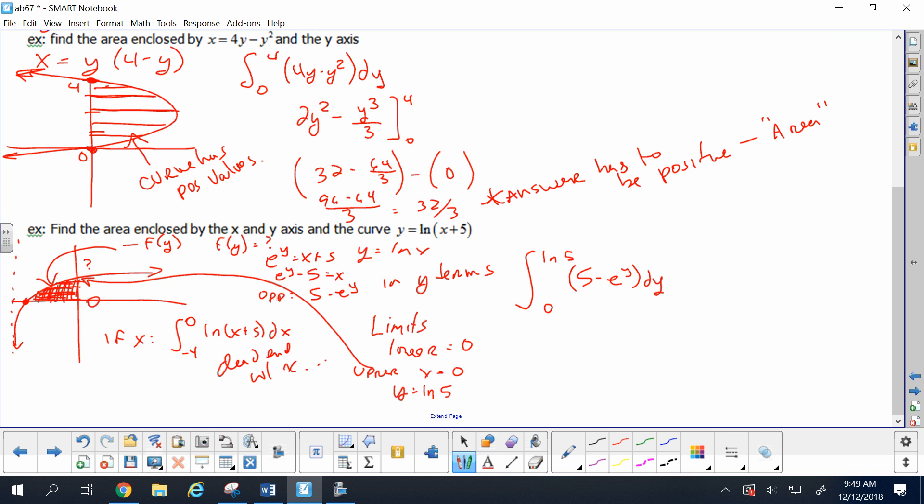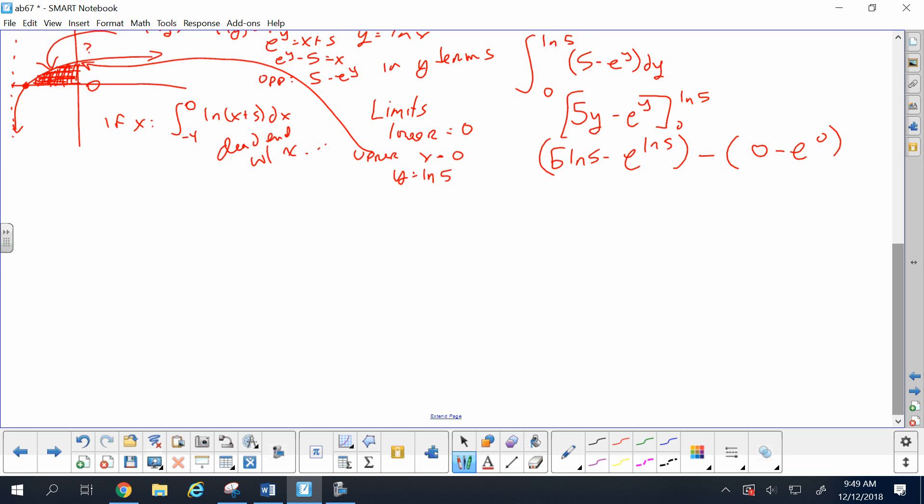We want to integrate five minus e to the y with respect to y. Now that you can integrate. You can't integrate log, but you can integrate e. What's the anti-derivative of five? Five y. And what's the anti-derivative of e to the y? E to the y from zero to log of five. When I evaluate at log five, I get five log of five minus e to the log of five minus zero minus e to the zero. Five log of five is fine the way it is. What's e to the log of five? It's just five. And e to the zero is one. So altogether, five log of five minus five plus one is five log of five minus four.